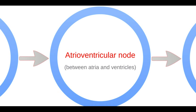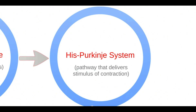This pulse then travels to the atrioventricular node, or AV node, which lies between the atria and ventricles. After remaining there briefly, it moves on to the HIS-Purkinje system, which is the group of cells that branches into the left ventricle and right ventricle, and stimulates them to contract and pump blood.